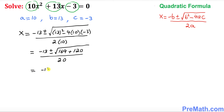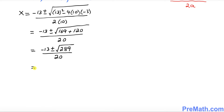The next step: negative 13 plus or minus — when you add 169 and 120, that adds up to 289 — divided by 20. So the next thing is negative 13 plus or minus the square root of 289, divided by 20. The square root of 289 is simply 17.